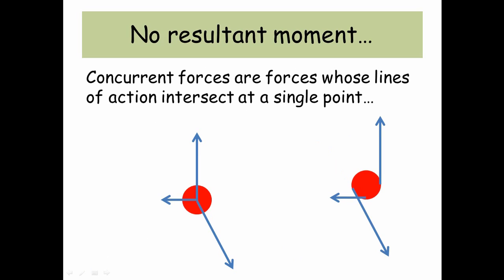No resultant moment. Concurrent forces are forces whose line of action intersect at a single point. So the object on the left, the forces are all going through a single point, or the lines of action of the forces are all going through a single point. So this object will not rotate as the forces act at a single point.